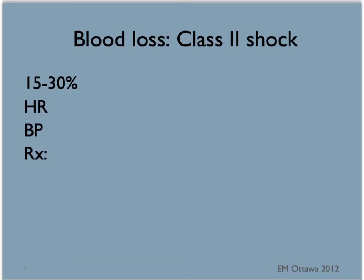In class 2 shock, the patient has lost about 15% to 30% of their blood volume. The heart rate will remain high and now the blood pressure will start to fall. The pulse pressure — that is, the difference between systolic and diastolic blood pressure — will narrow. In terms of treatment, it is still crystalloid fluid until both the blood pressure and heart rate normalize.